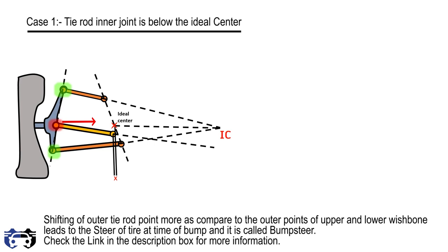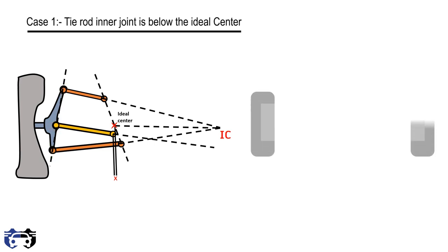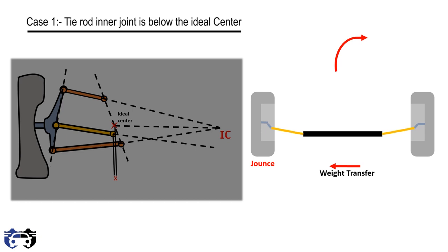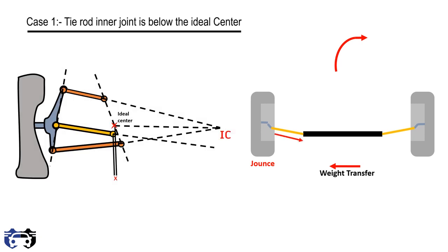This inward shift is called bump steer. The same effect occurs when the vehicle rolls. In a top view of the front geometry, when the vehicle takes a right turn there is rolling of the vehicle, causing weight transfer towards the left. This causes jounce in the left tire — the same effect as a bump, compressing the suspension strut — which pulls the tie rod inward and steers the left tire towards the left direction.